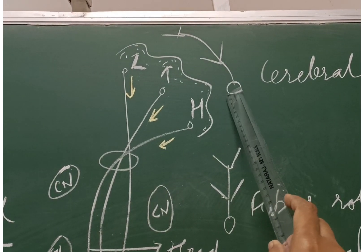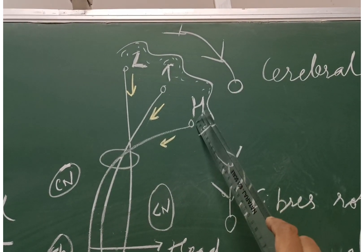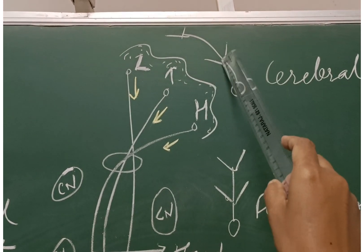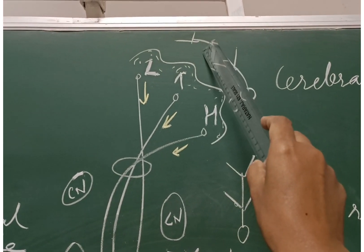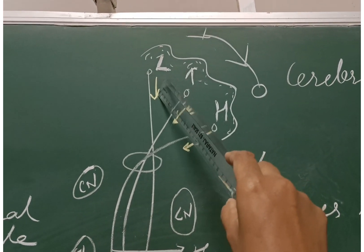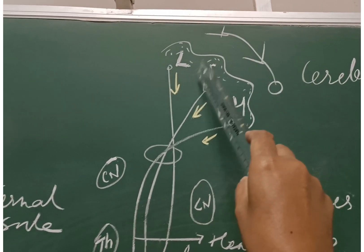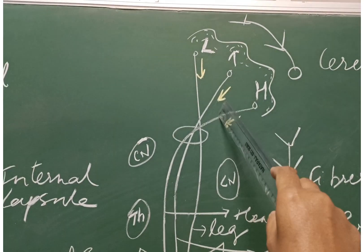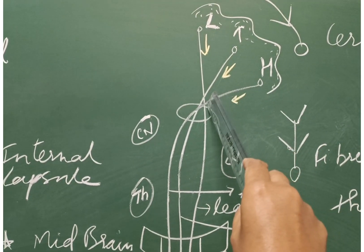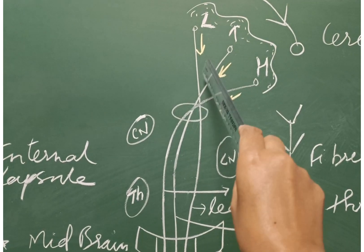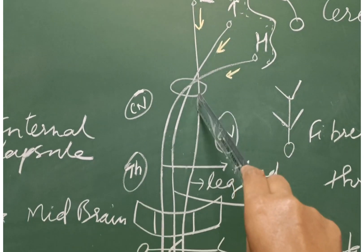On the cerebral hemisphere, the leg fibers are on the topmost position and the head fibers are at the lowermost. While descending to the internal capsule, the head fibers are coming to the internal capsule, these are the trunk fibers, and these are the leg fibers.